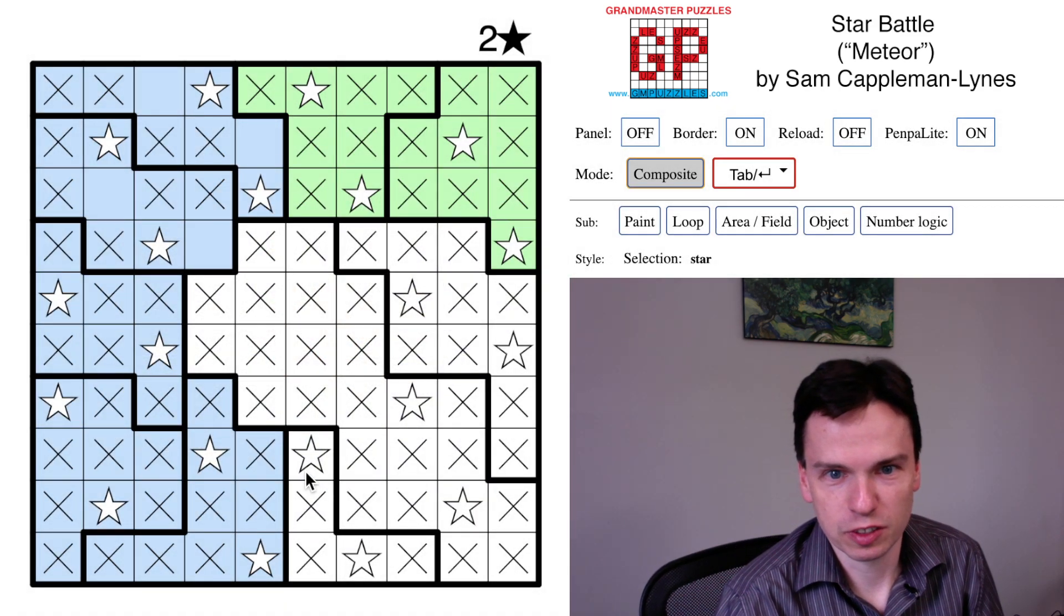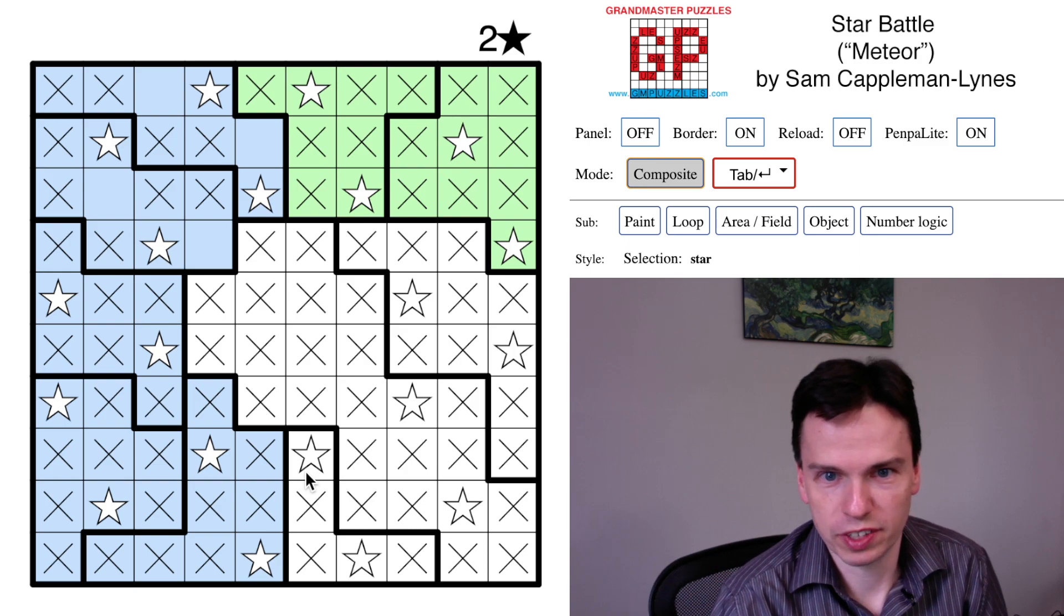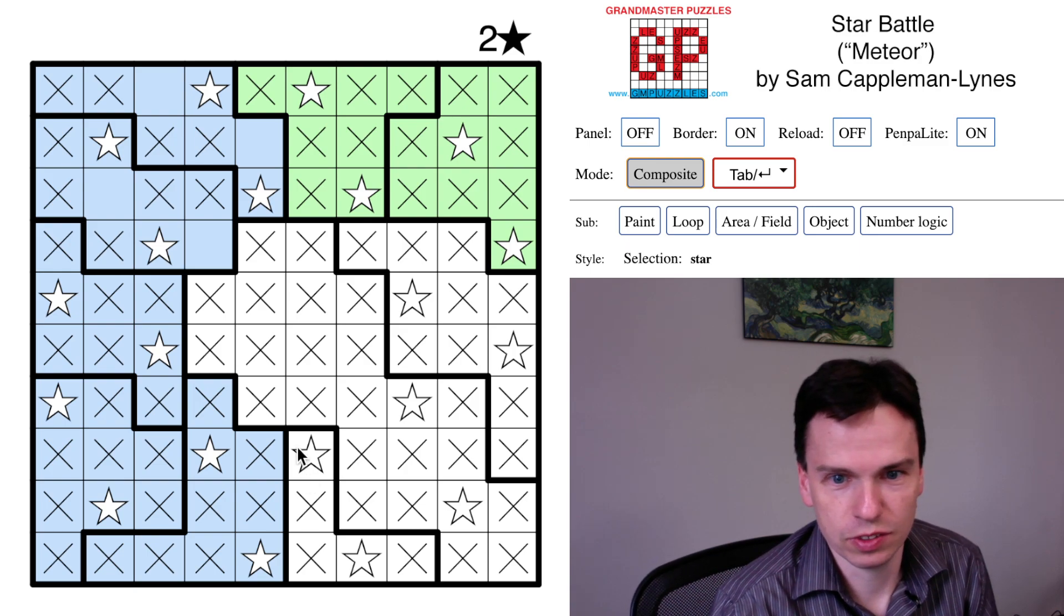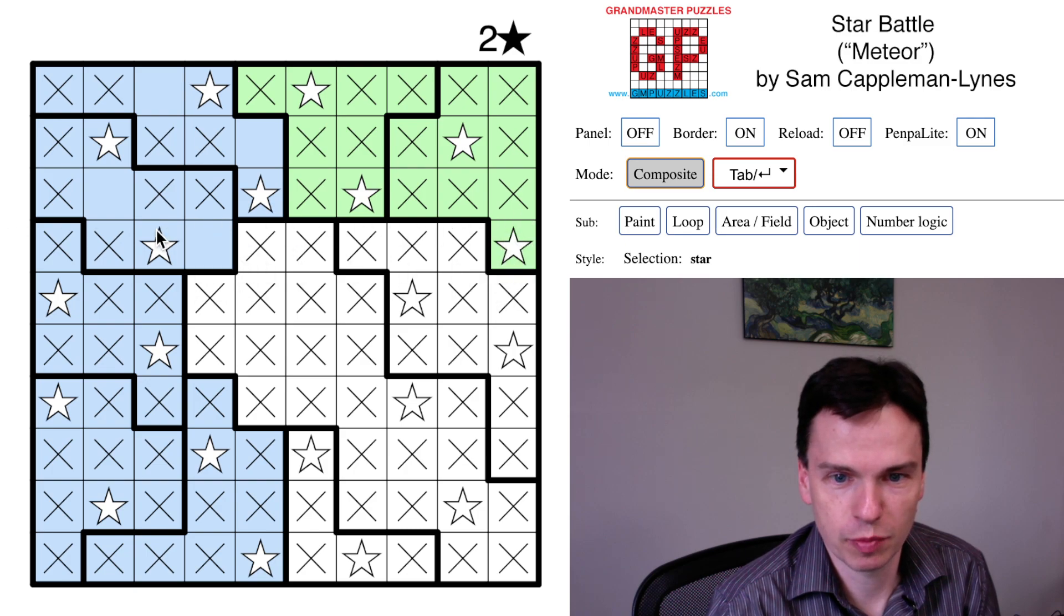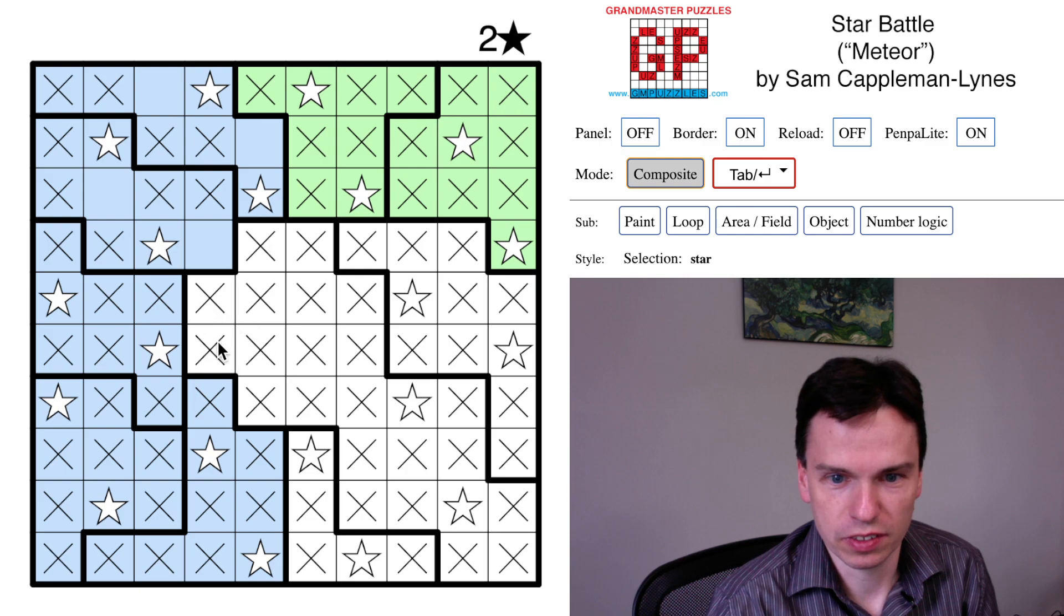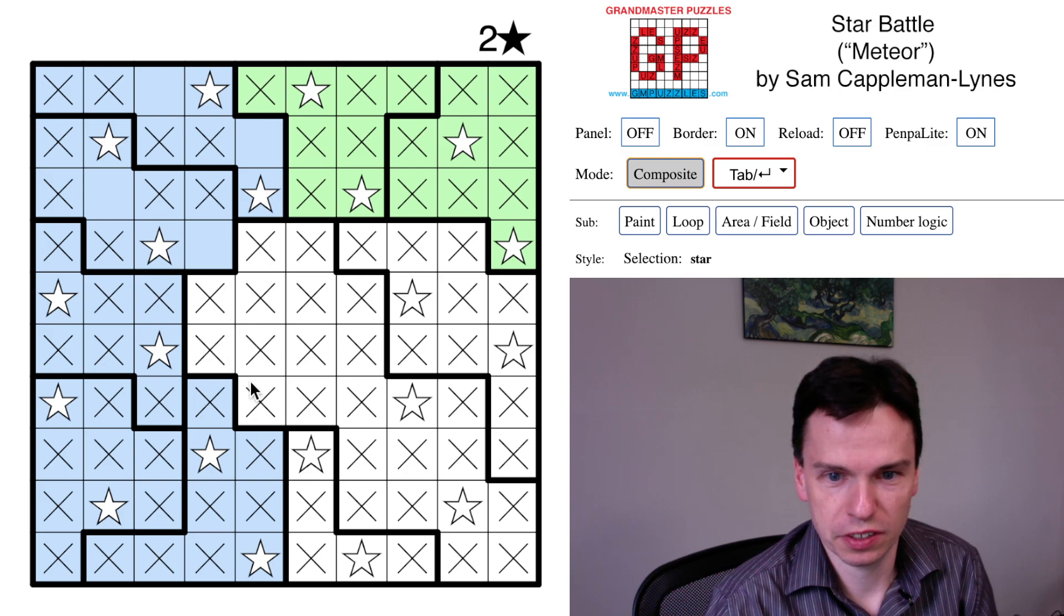So really challenging puzzle from Sam. Really appreciated the use of the region count constraints, both on the top four rows and on the left five columns and how those work together to even delete part of the meteor in the center.